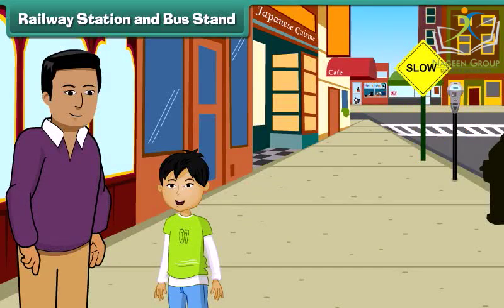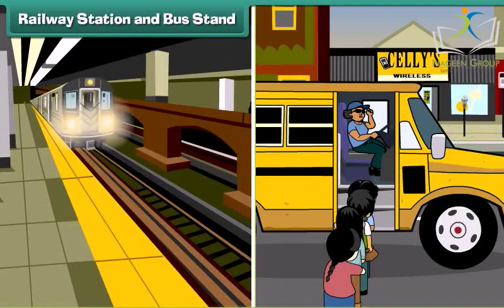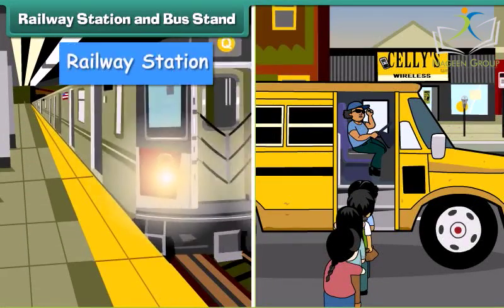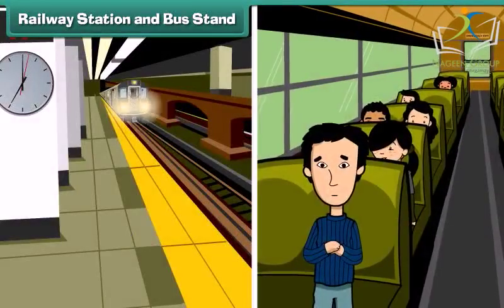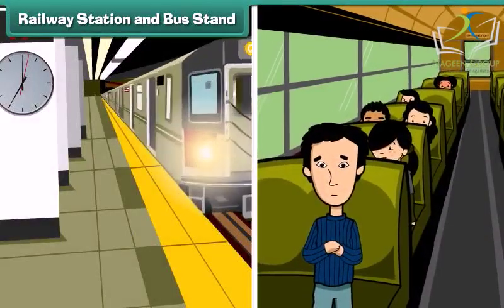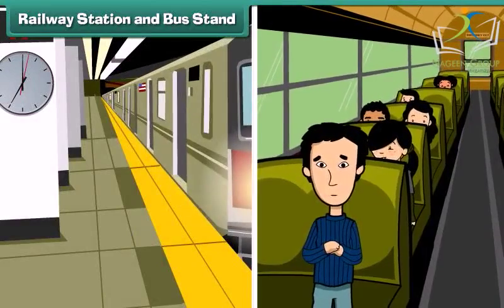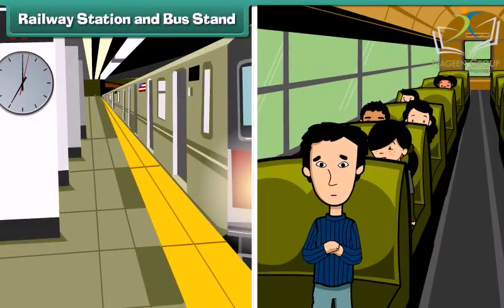Dad, I am getting tired now. Shall we go back home? Ok dear, let's go to the railway station. This is the railway station, and in front of it, that is the bus stand. People travel by trains or buses. Trains and buses join our city to various places.